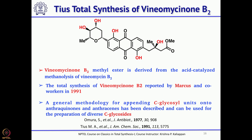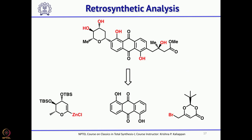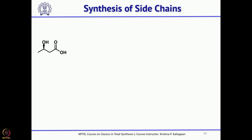Now let us see the second total synthesis, which is the chiral one reported by Marcus Tyus. For the left-hand side glycol part, he started from D-glucol as the key starting material to introduce the chiral center. According to him, this Viniomycinone can be easily disconnected into three fragments: one fragment on the left, the dihydroxyanthraquinone as the middle second fragment, and a third fragment from another intermediate. These are the three fragments one could logically disconnect.